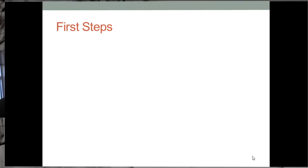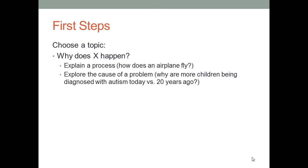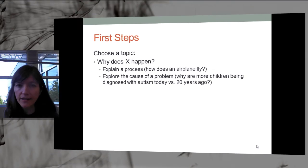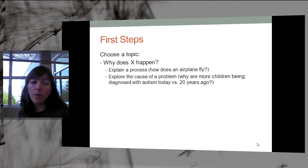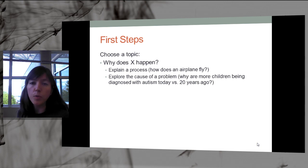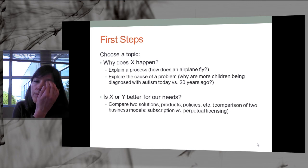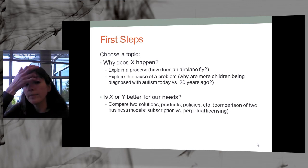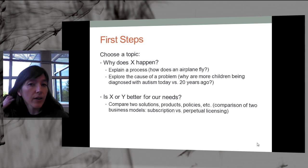The first thing you need to do is choose a topic. This final tech report is somewhat similar to your midterm proposal assignment, except it's broader. You could choose a topic based on why something happens — explaining a process like how does an airplane fly, or exploring the cause of a problem, like why are more children being diagnosed with autism today versus twenty years ago.